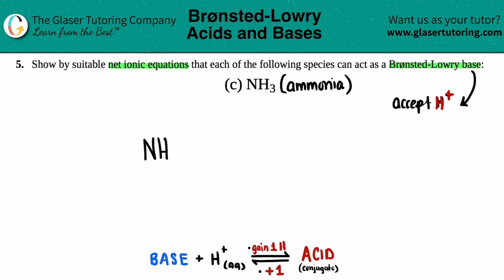NH3 plus H+. And anytime that you see a charged ion with the net ionic equation, it's always going to be aqueous. And since we're dealing with acids and bases, we're going to assume that NH3 is also aqueous as well. Generally speaking, acids and bases are going to be aqueous. So this is not the gas type.